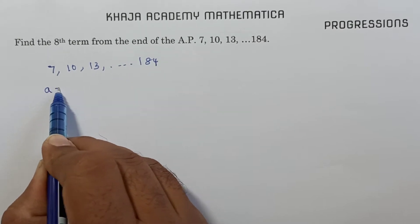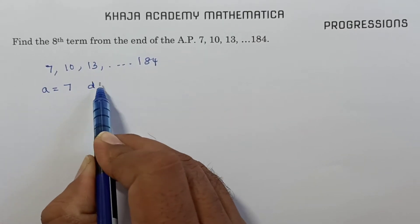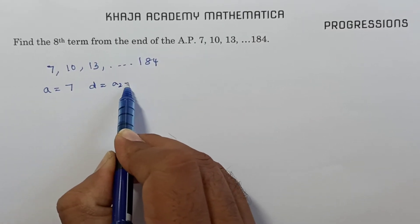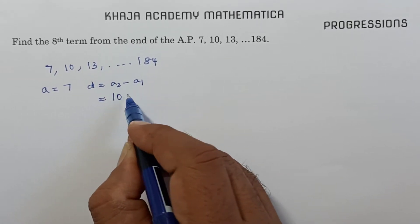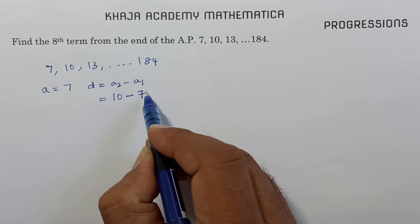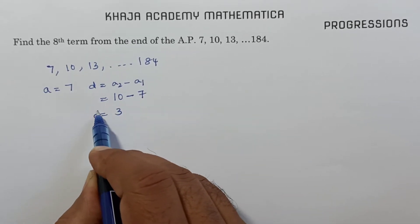Here if you see, the first term is 7. Common difference is nothing but A2 minus A1. So A2 is 10 minus 7, that is 3. Common difference is 3.